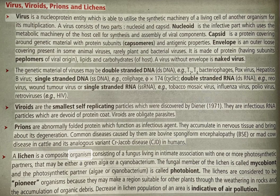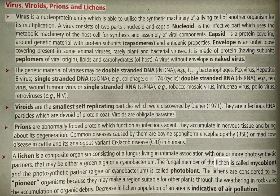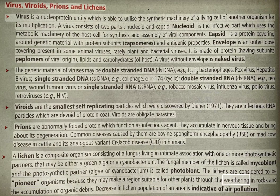A lichen is a composite organism consisting of a fungus living in intimate association with one or more photosynthetic partners, which may be either a green alga or a cyanobacterium. The fungal member of the lichen is called the mycobiont, and the photosynthetic partner (algae or cyanobacterium) is called the photobiont. Lichens are considered pioneer organisms because they make a region suitable for other plants through the weathering of rocks and accumulation of organic debris.